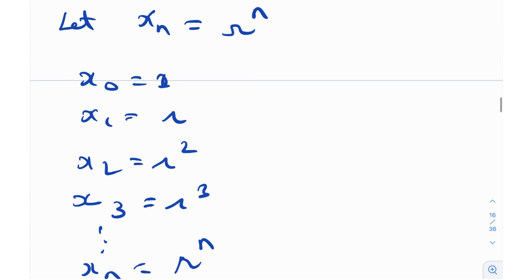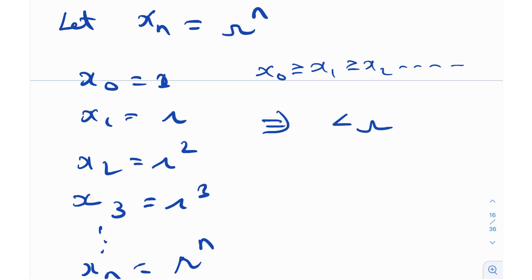Remember condition number 1: x0 ≥ x1 ≥ x2 ≥ ... So each subsequent term must be equal to or smaller. For this geometric sequence, that means r must be between 0 and 1. If r = 1 all terms are equal; if r is strictly between 0 and 1 the terms are diminishing. So for condition number 1 to hold, we strictly need r in the interval (0, 1].